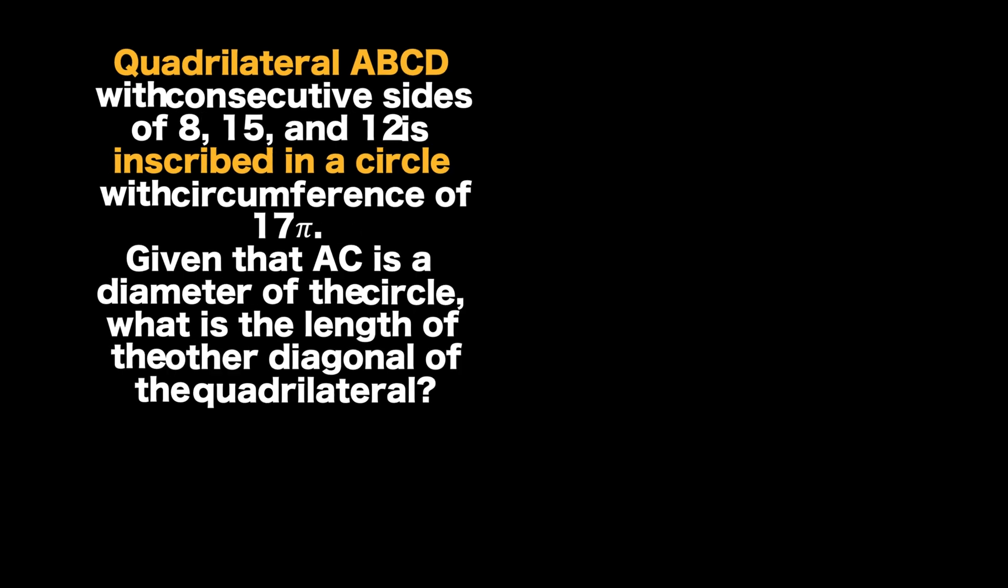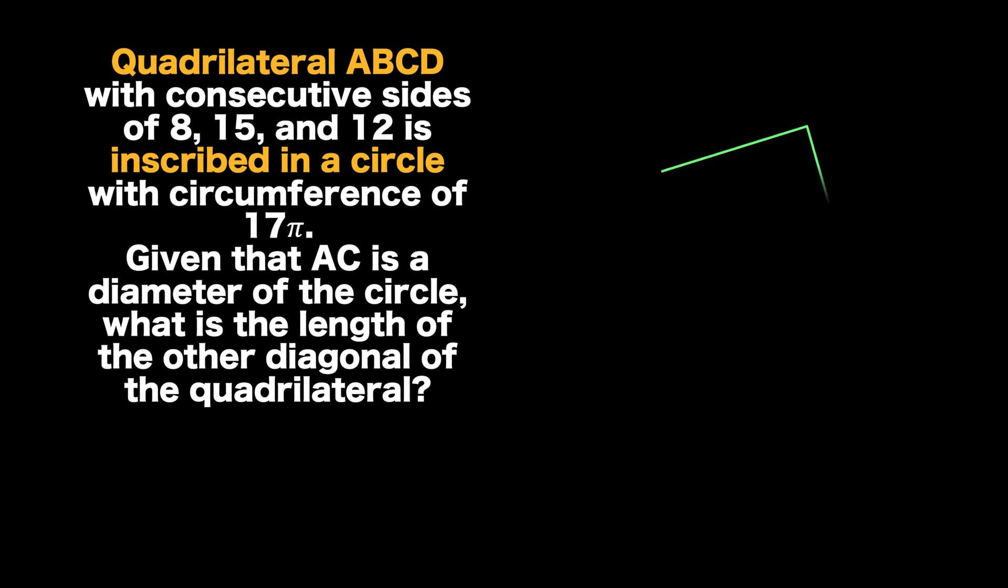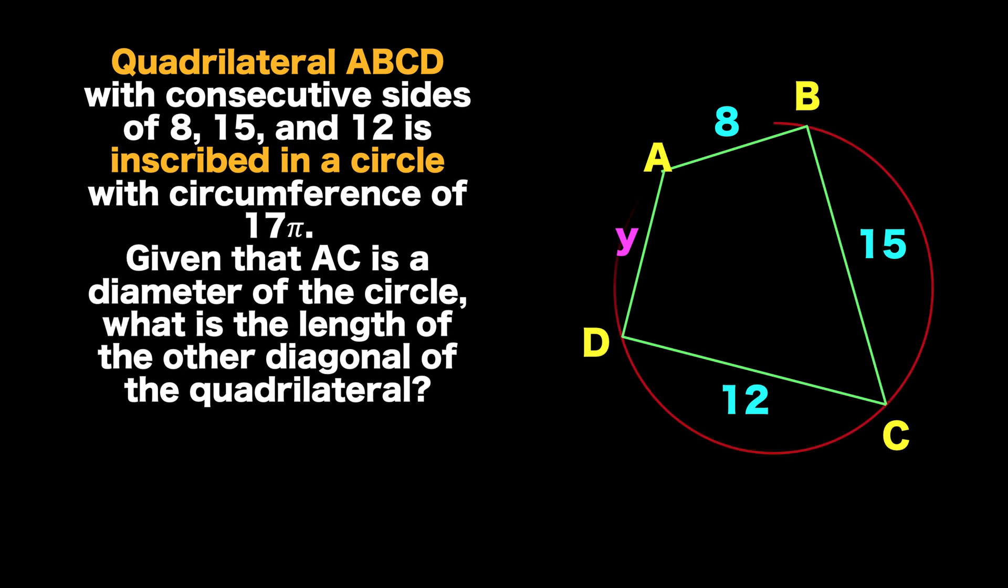We are given here a quadrilateral ABCD with consecutive sides of 8, 15, and 12. We do not know the length of the fourth side. This quadrilateral is inscribed in a circle with a circumference of 17 pi.